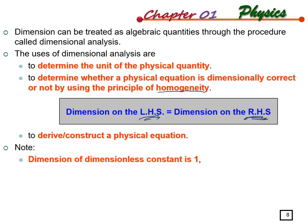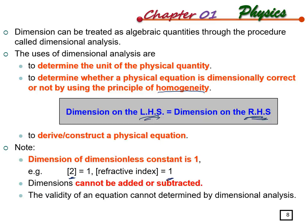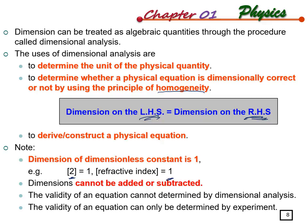The dimension of a dimensionless constant is 1. For example, if you have a value of 2, it has no dimension, so it is equivalent to a constant of 1. Also, dimensions cannot be added or subtracted. The validity of any equation depends on the equation itself, and can only be verified by experiment.